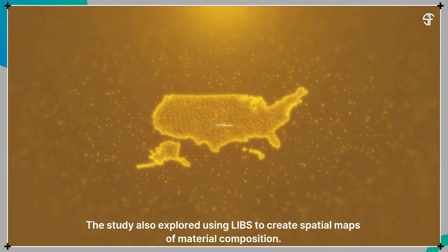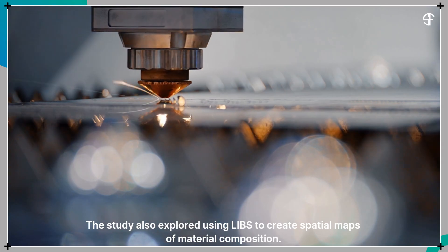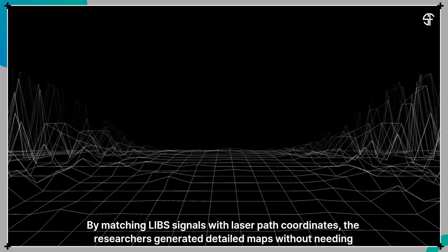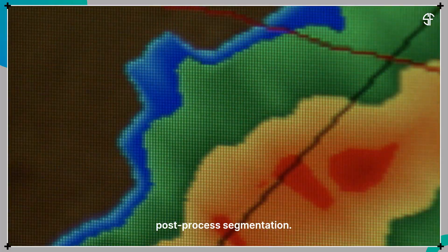The study also explored using LIBS to create spatial maps of material composition. By matching LIBS signals with laser path coordinates, the researchers generated detailed maps without needing post-process segmentation.